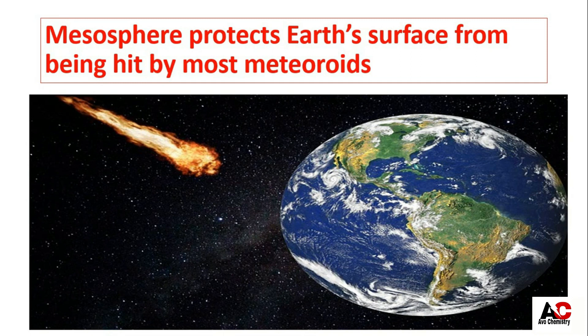In the mesosphere, meteoroids collide with air and gas molecules. Due to this collision, friction is produced, which causes the temperature of the air and gas molecules to increase greatly. As a result of this energy, the meteoroids get burned. They don't have their own light, but as a result of burning these particles glow — that is why they are known as shooting stars or falling stars.